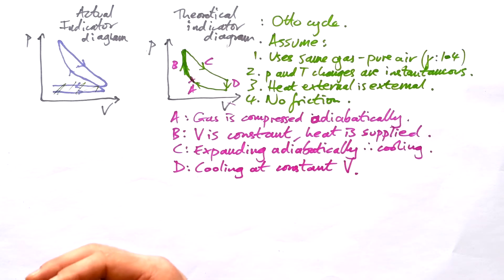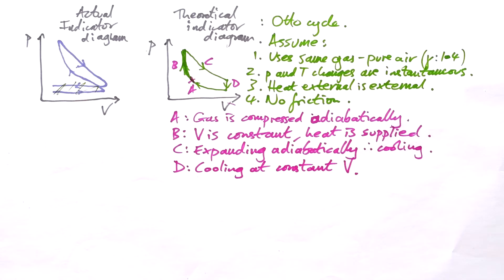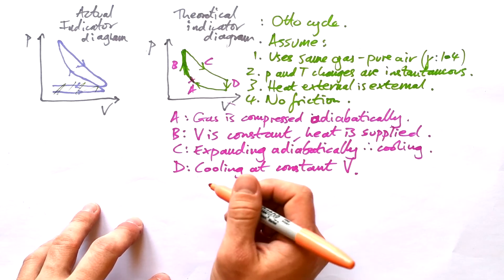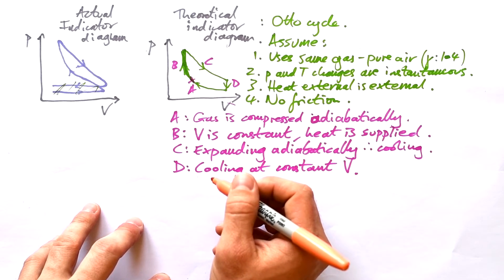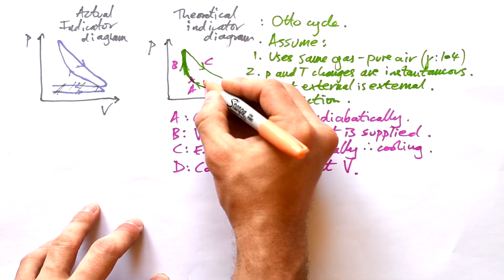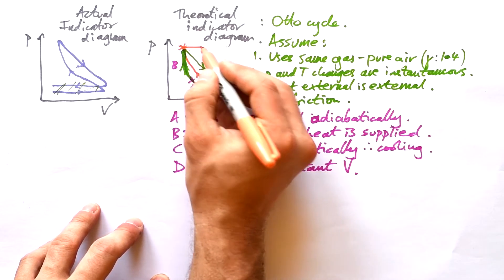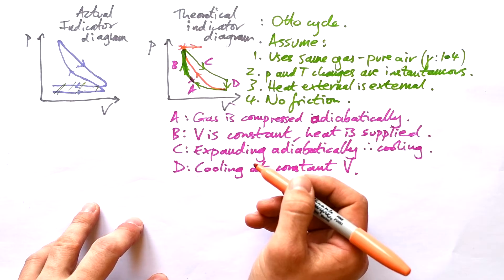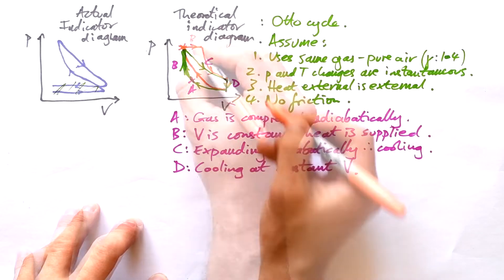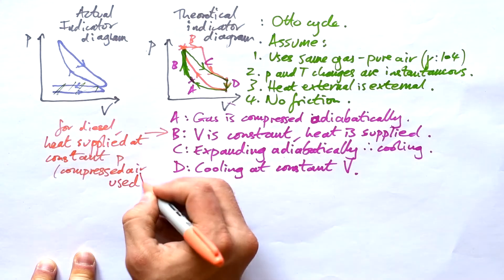Like we said, that isn't what happens in reality. This is what happens in reality. But we can model it theoretically. And that allows us to do some maths with that. For a diesel engine, we said that it's compressed gas that goes in. And so we don't have the spark as the gas is being compressed. What we have is the gas being compressed and then we have the spark at the top. And so that's when heat is supplied. Heat is supplied at a constant pressure. And then pretty much the rest of it is the same. So for diesel, heat supplied at constant P because we're using compressed air.